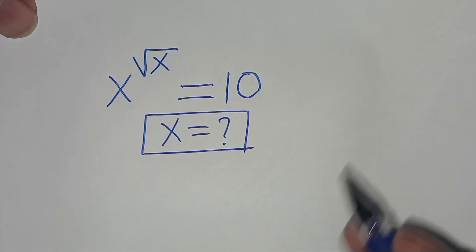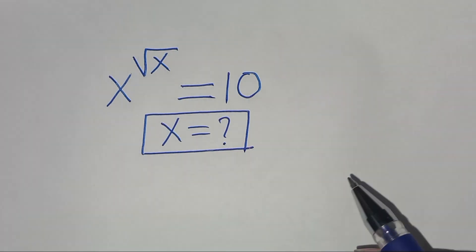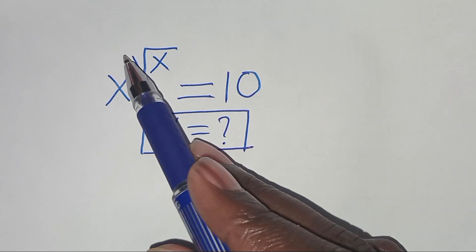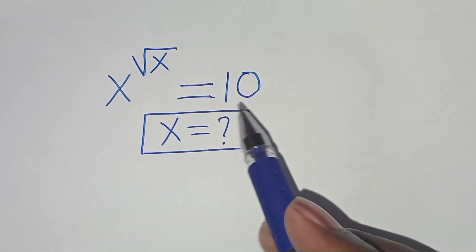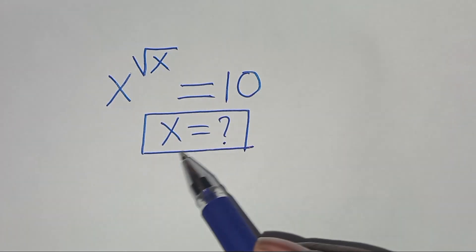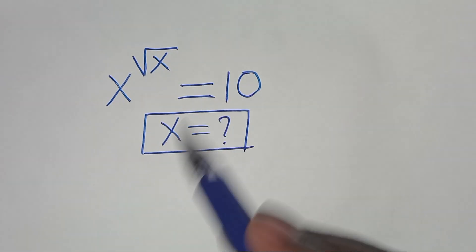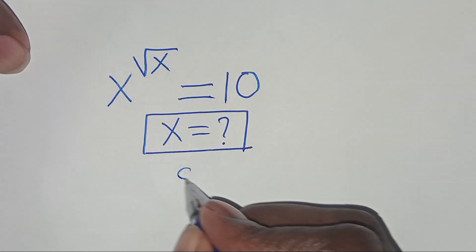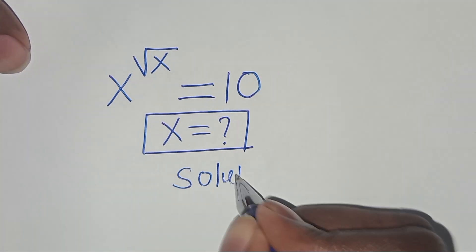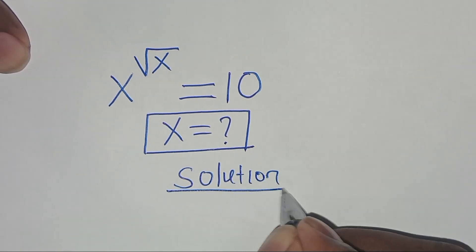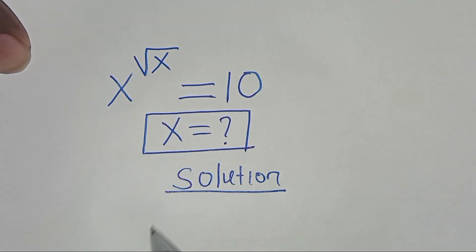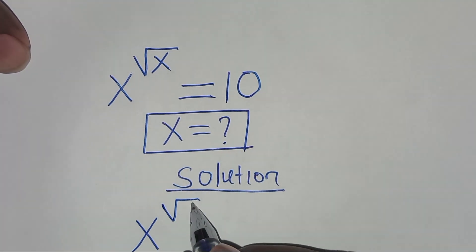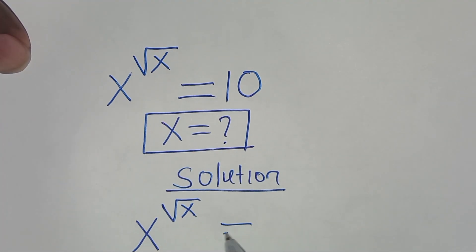Hello everyone, you are welcome to solve this nice algebra problem, which is x to the power square root of x, and this is equal to 10. What is the value of x? Let's present a solution from here. We have x raised to power square root of x, this is equal to 10.